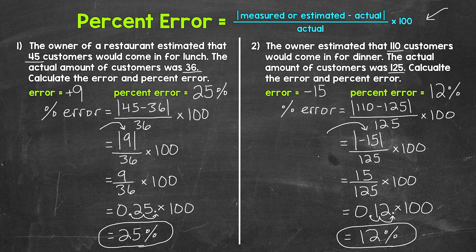For lunch, the percent error was 25% — the estimate was off the actual value by 25%. For dinner, the percent error was 12% — the estimate was off the actual value by 12%. So that tells us that the owner's estimate for dinner was quite a bit more accurate than the estimate for lunch. Percent error gives us the information we need to make that determination.